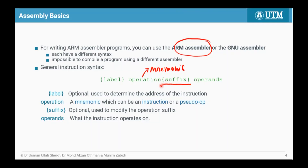The suffix tells the CPU to check the status register flags after executing a certain instruction. If you do not put a suffix, the status register will not be updated after execution. Last but not least, we have the operand, which consists of the destination register and the source register — where the data is coming from and where it will be stored. This is the general instruction syntax that all assembly language must follow.